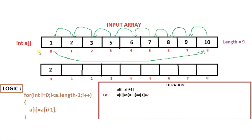This is our input array. First we will make a logic for rotation of the array by position one, and later we will make changes for N positions. As we know, the index of an array starts from zero and ends with length of array minus one. Here our length is nine, so nine minus one is eight — the ending index is eight. Since we want to rotate the array to the left by position one, we have to shift the element at index one to index zero, the element at index two to index one, and so on.